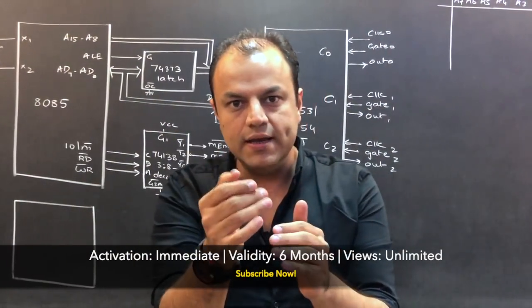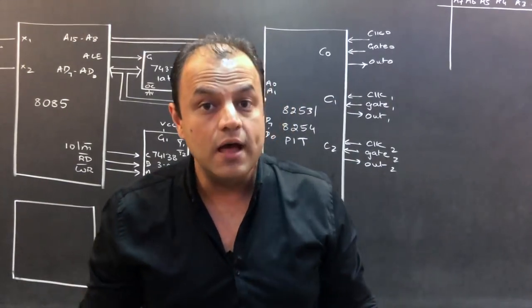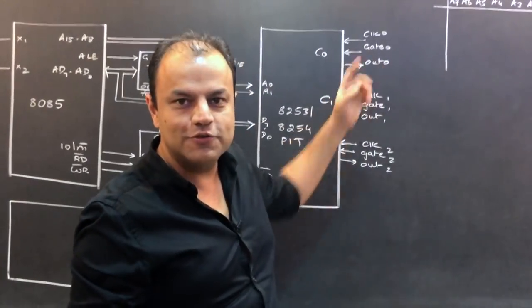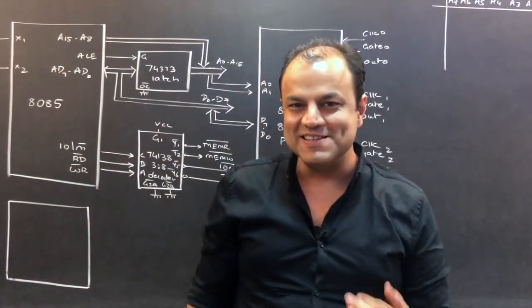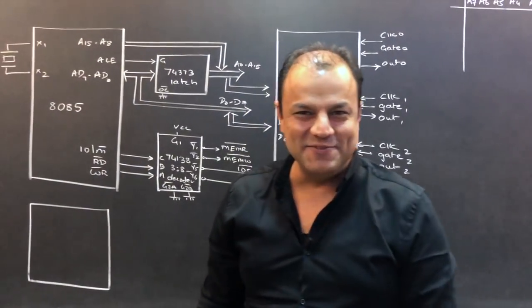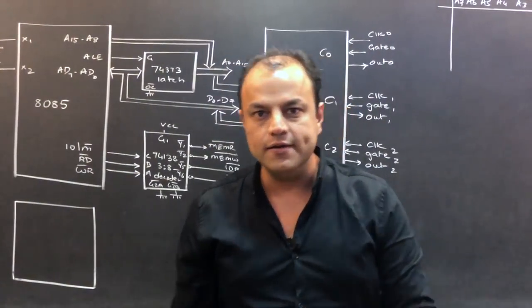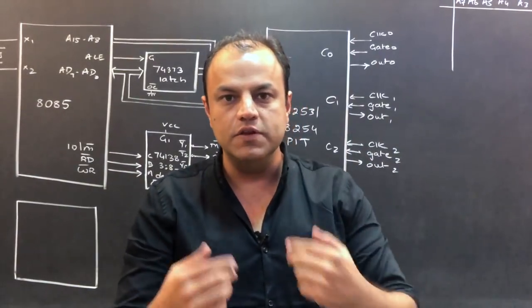The moment gate becomes one, counting starts. Now, the 30 will become 29, then become 28. Now, that won't happen whenever it feels like. It needs an appropriate clock for that. That clock is given on this clock signal. On every clock pulse, count will go on getting decremented. Suddenly, you find it interesting, right?